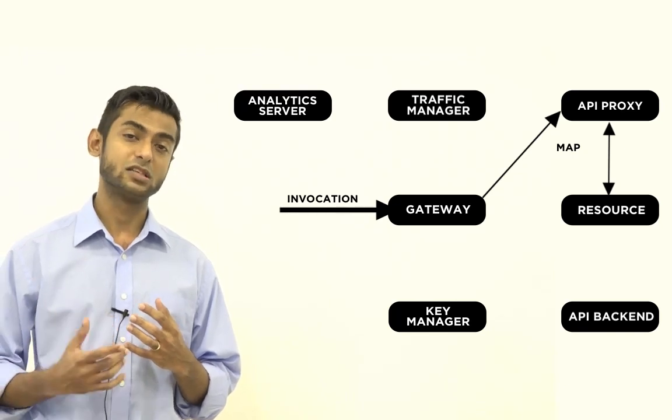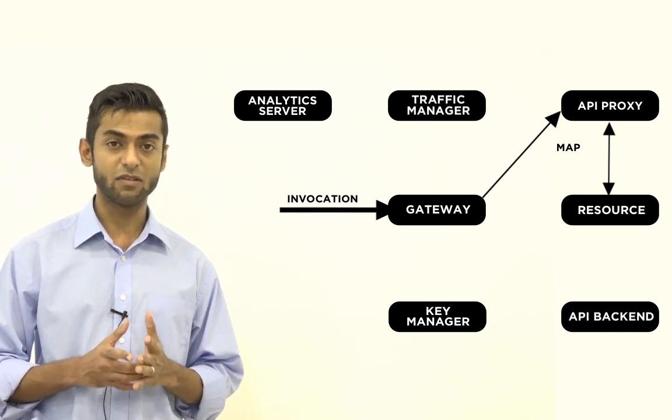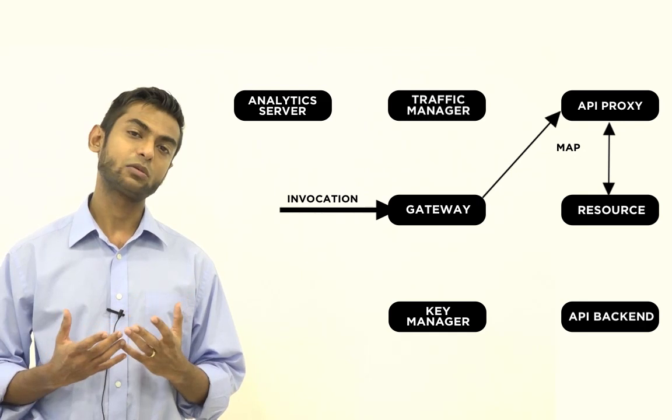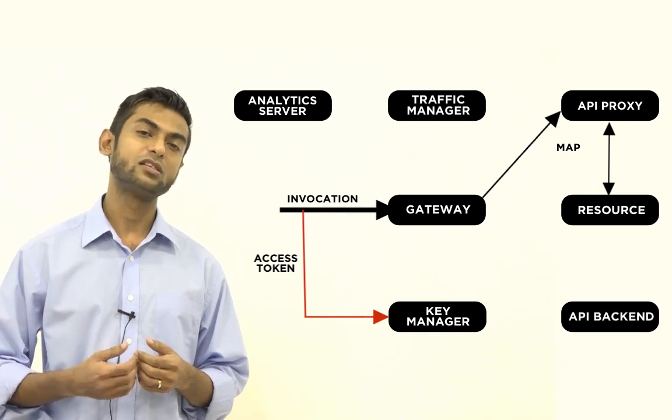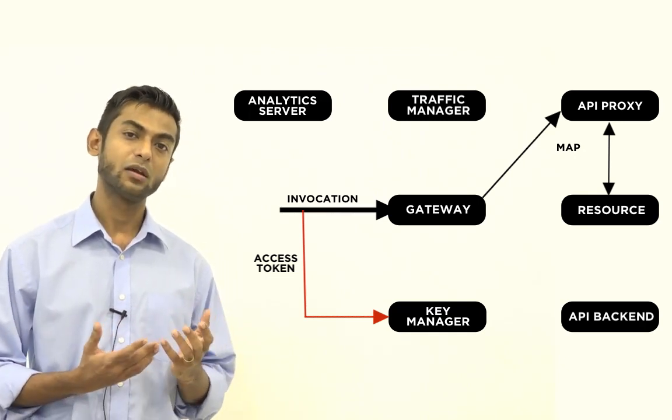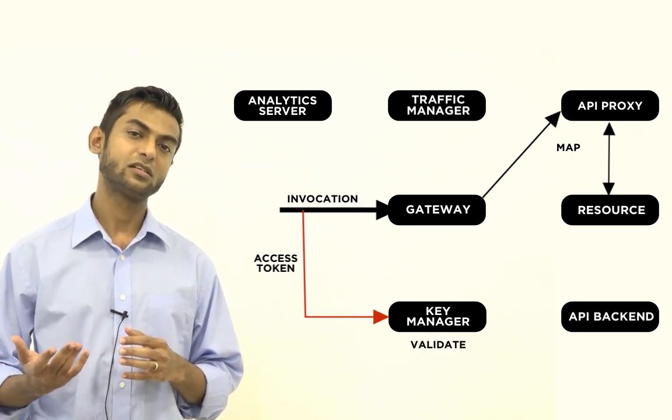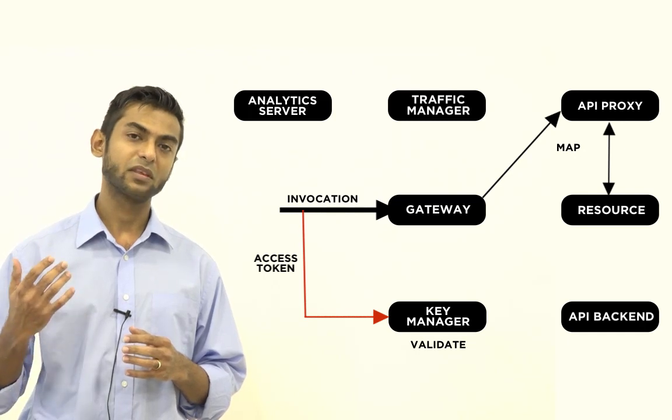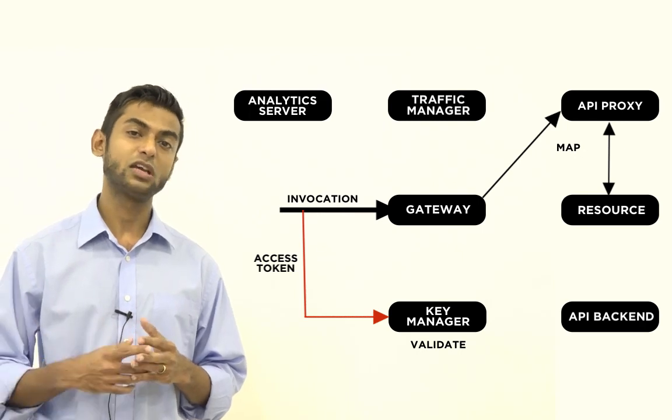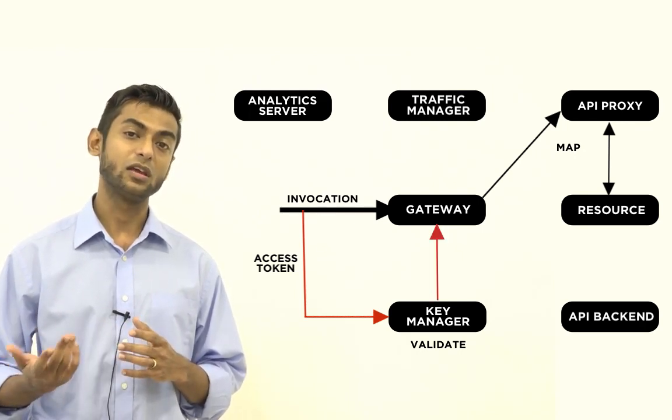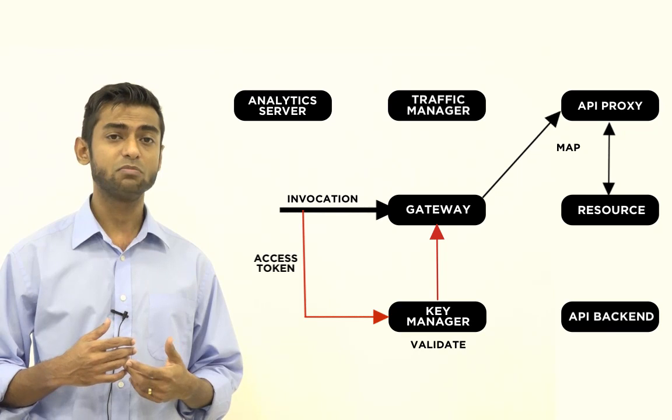The next thing it does is it needs to authorize this API call to make sure that it is a valid one. To do this the API Gateway will extract the access token that is sent along with the API invocation and it will send this to the key manager component of the API manager. The key manager component will validate the access token against the database and return back to the API Gateway informing it if the API call is valid or not.